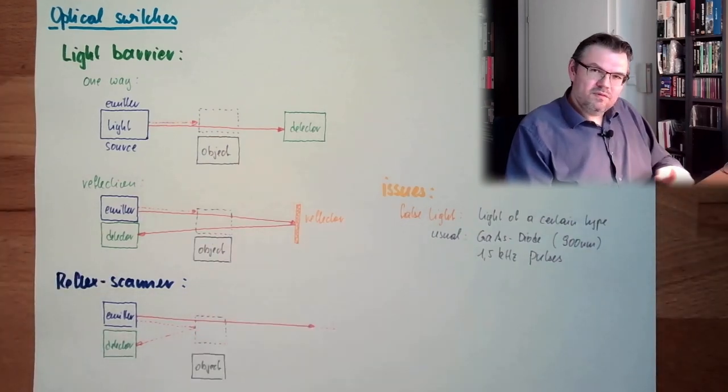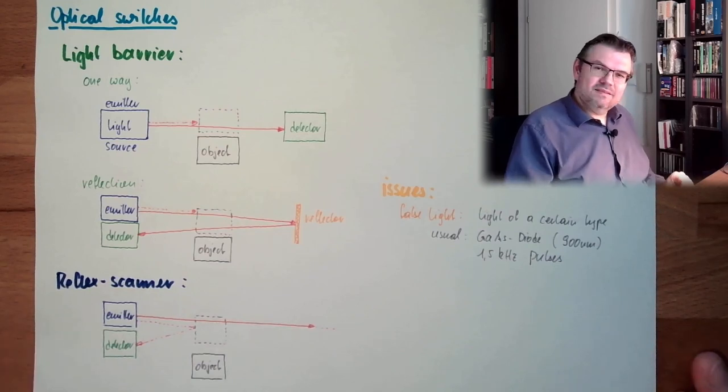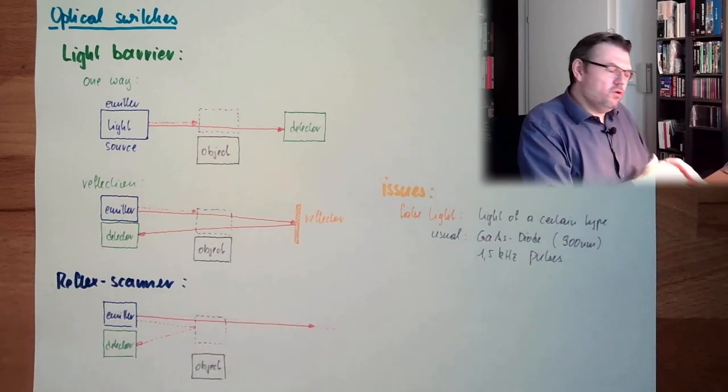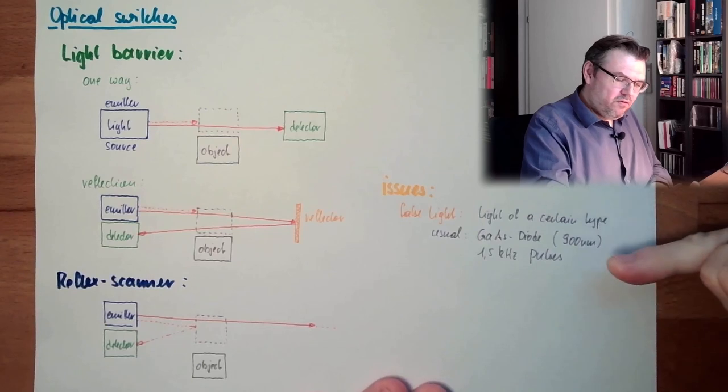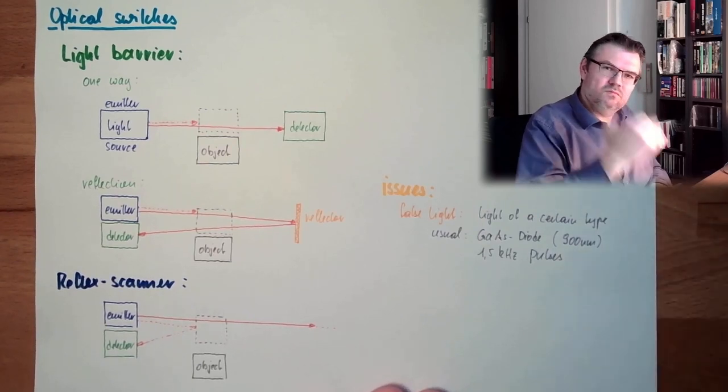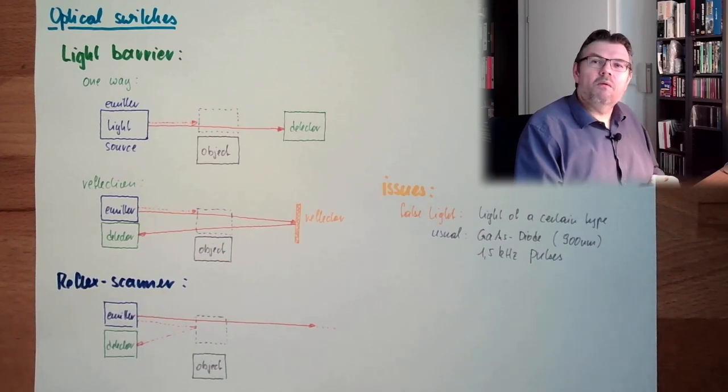So this is how you at least can prevent somehow a little bit this false light. Because then sunlight would not trigger the detector, because it simply has not the correct wavelengths and not the correct pulses. So we can somehow detect our own light.